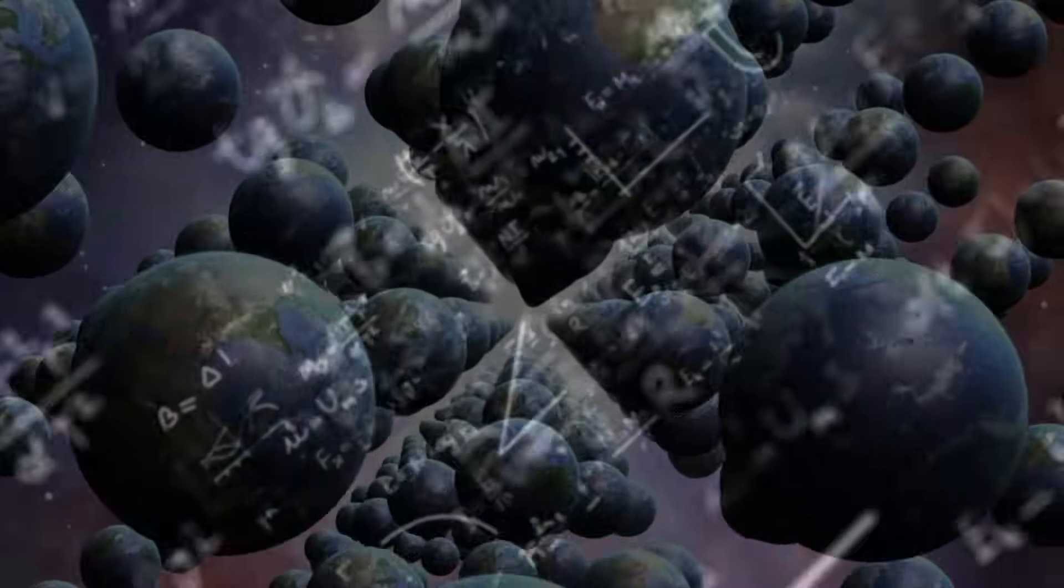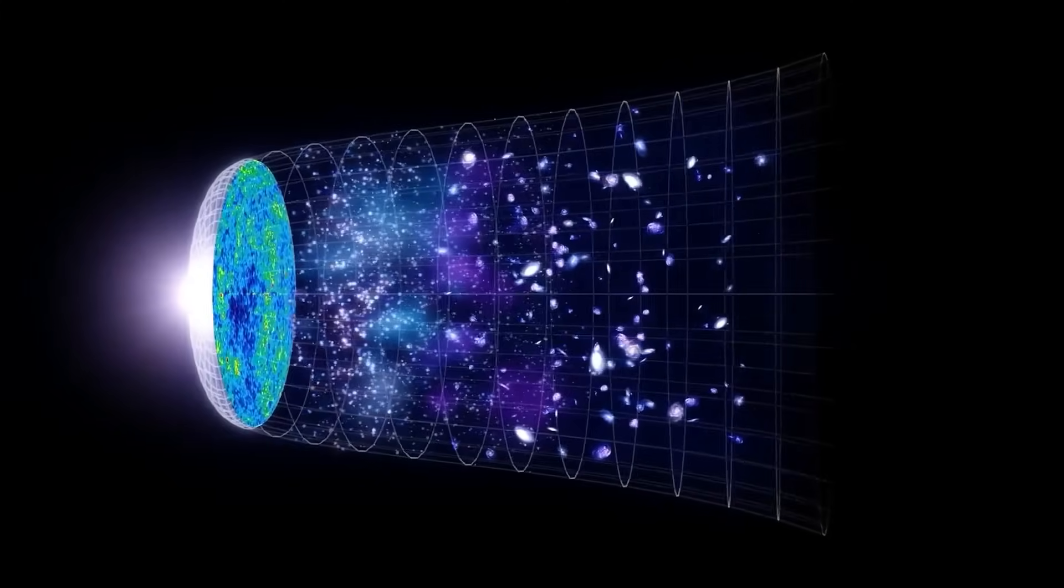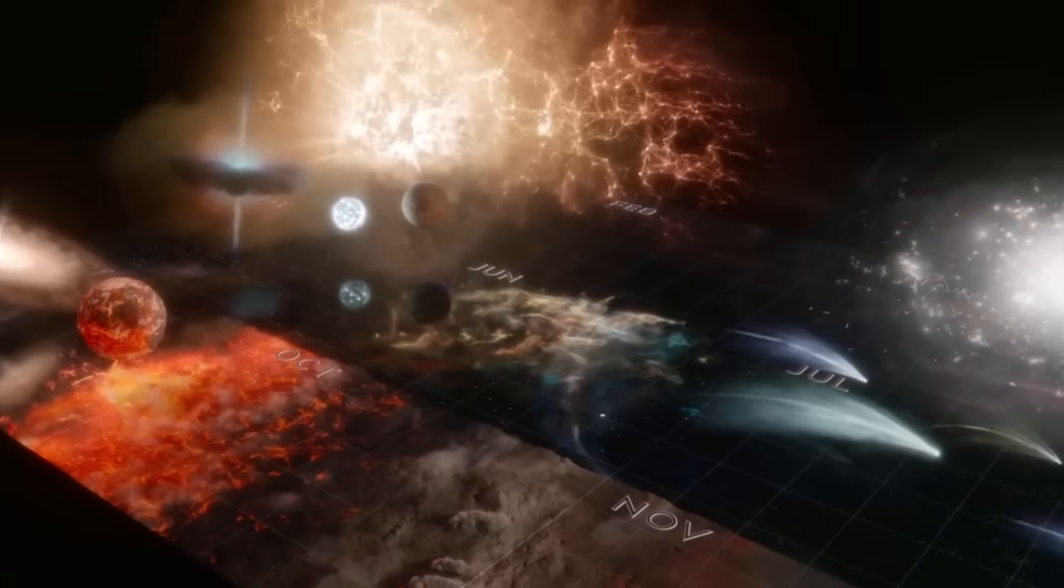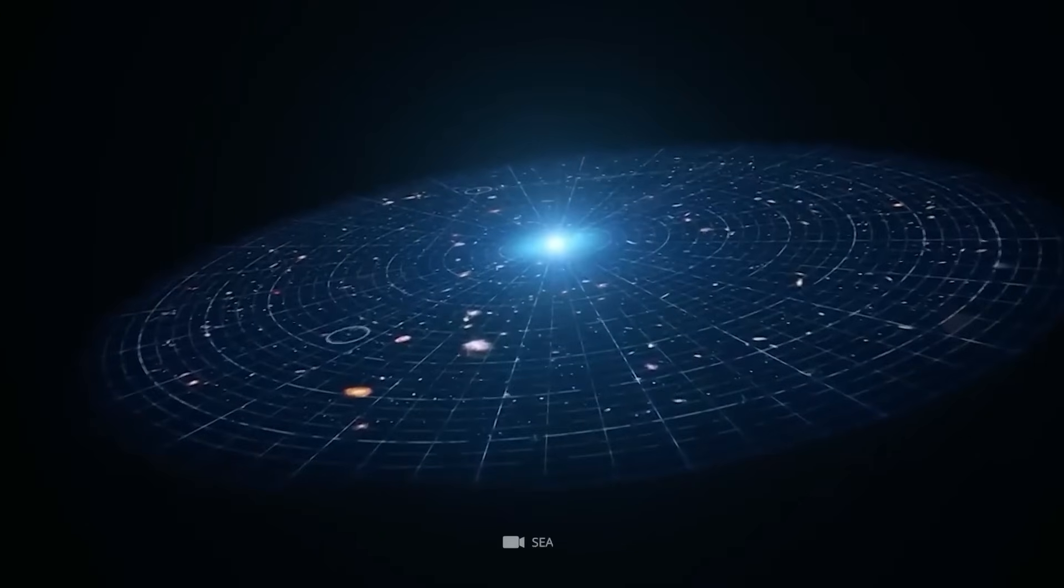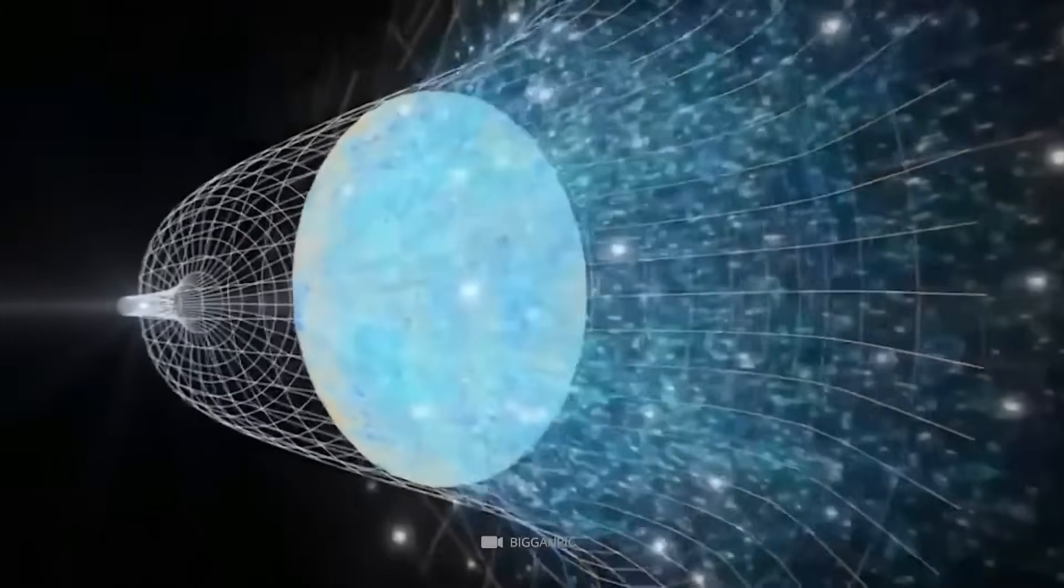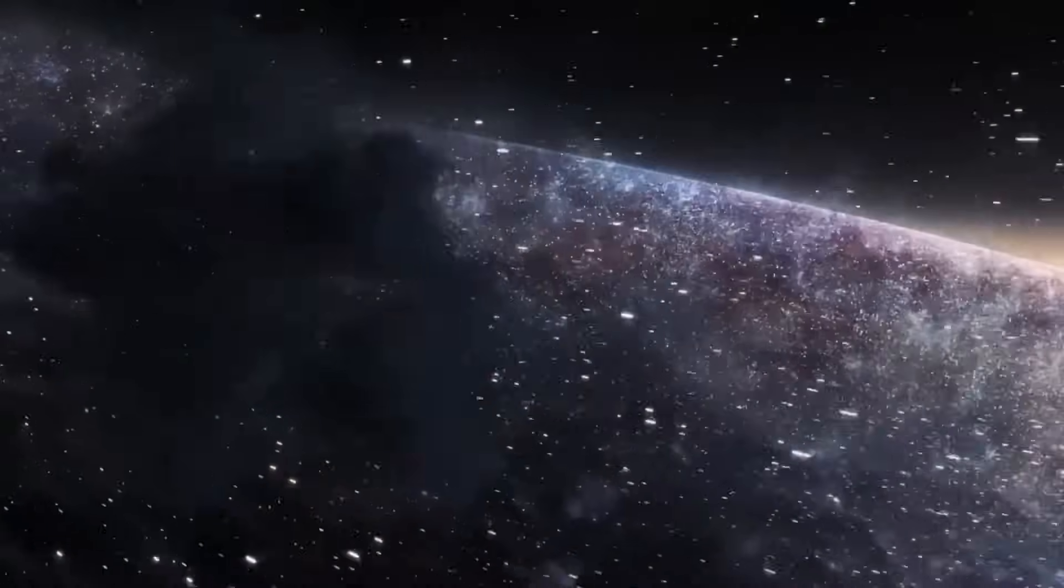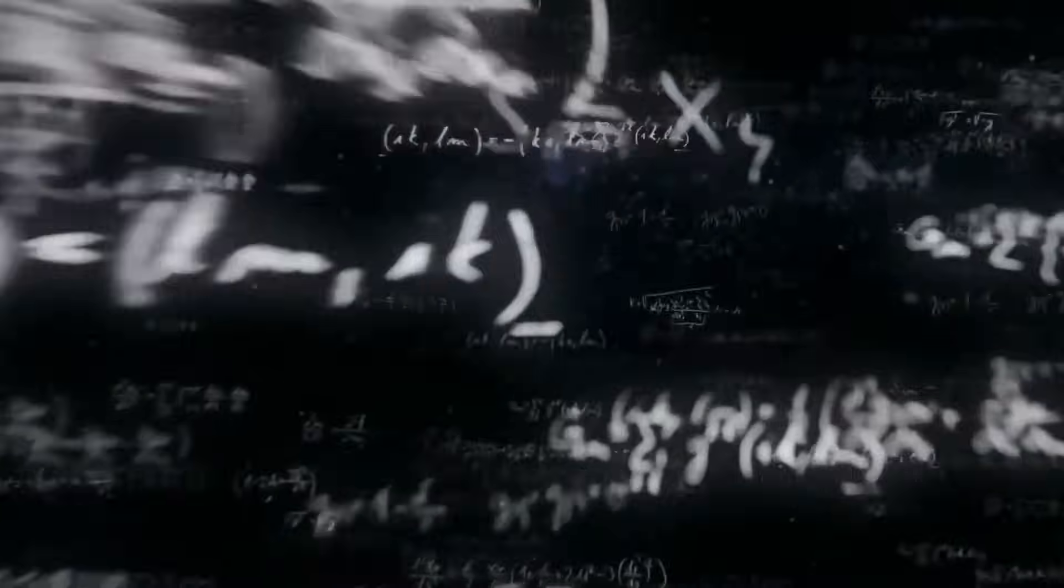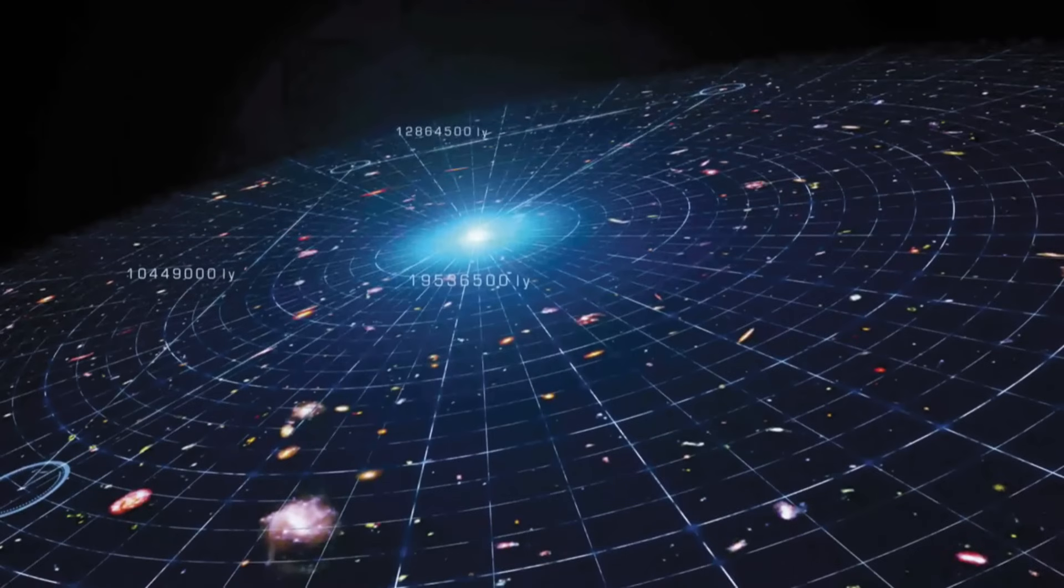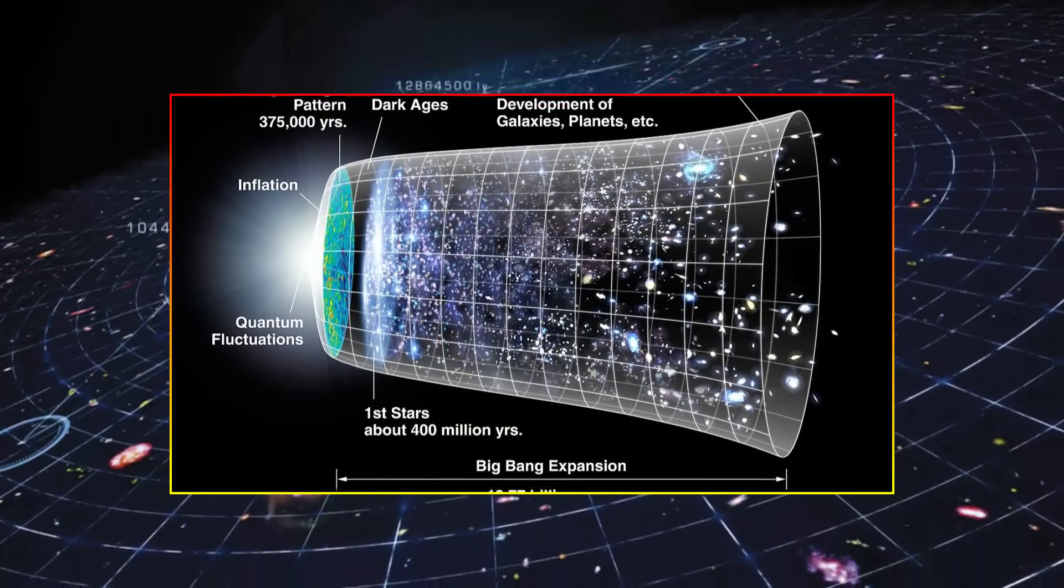Right now, the multiverse remains a theoretical concept, a fascinating idea, but without solid proof. However, could we actually find real scientific evidence that parallel universes exist? Some physicists believe that new technology and upcoming experiments might hold the answer. The James Webb Space Telescope, JWST, is already refining our measurements of cosmic expansion with greater precision than ever before. If something beyond our universe is subtly distorting space-time, JWST could detect unexpected anomalies, tiny deviations in how galaxies move that hint at hidden cosmic influences.